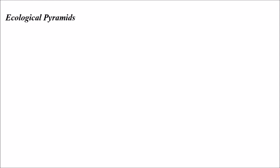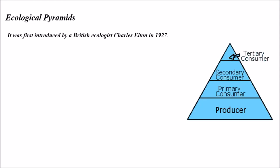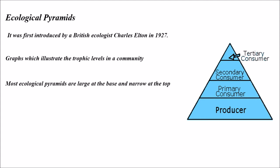Ecological pyramids were first introduced by a British ecologist, Charles Elton, in the year 1927. Graphs which illustrate the trophic levels in a community are called pyramids.